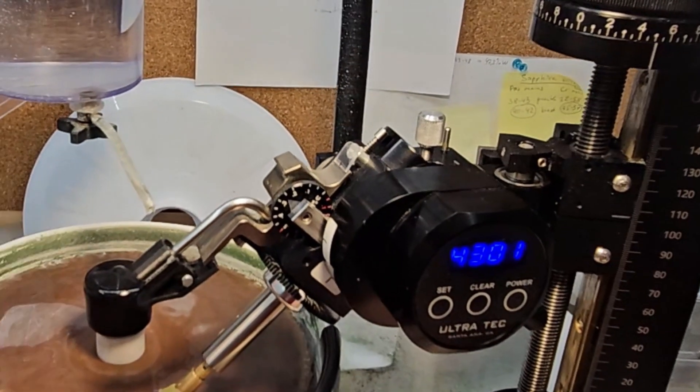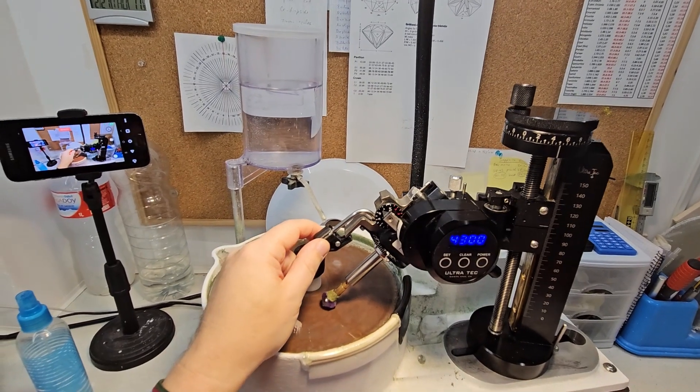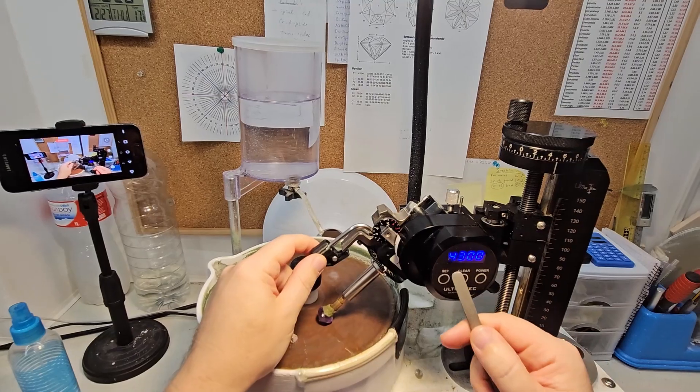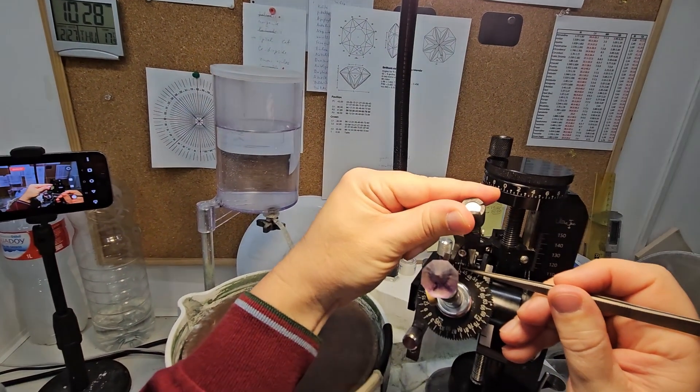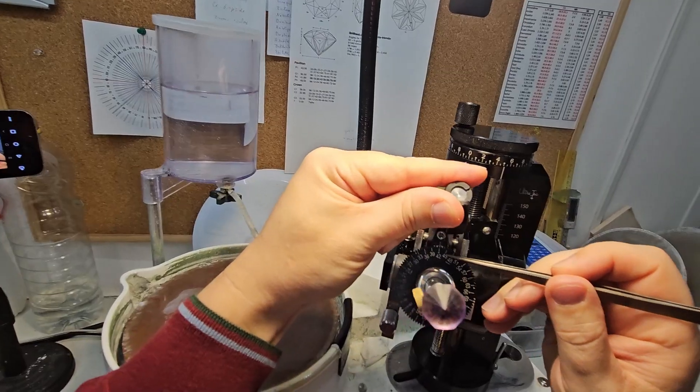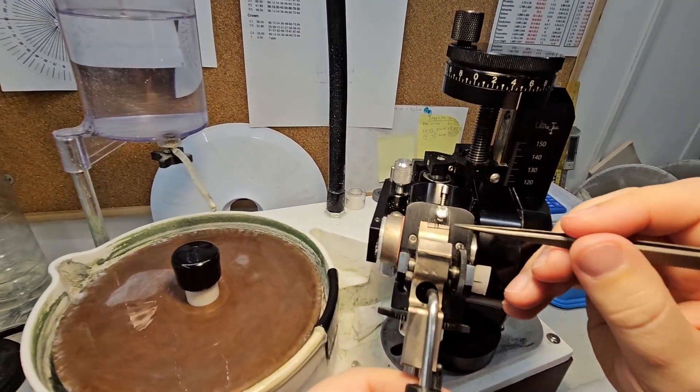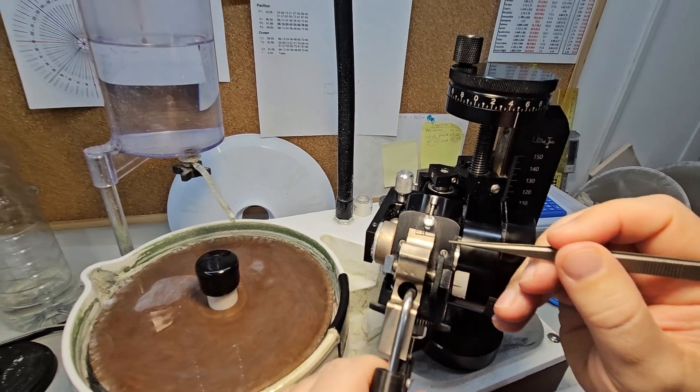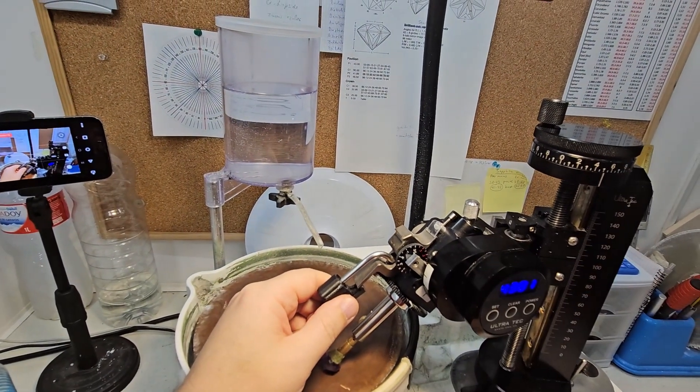Now, when recording the exact position of a facet, I use four numbers instead of two. The usual angle and index plus the ruler position and the cheater reading, marking the white numbers with a plus sign and the red numbers with a minus sign. This way, I can return to the exact facet position quickly and efficiently.